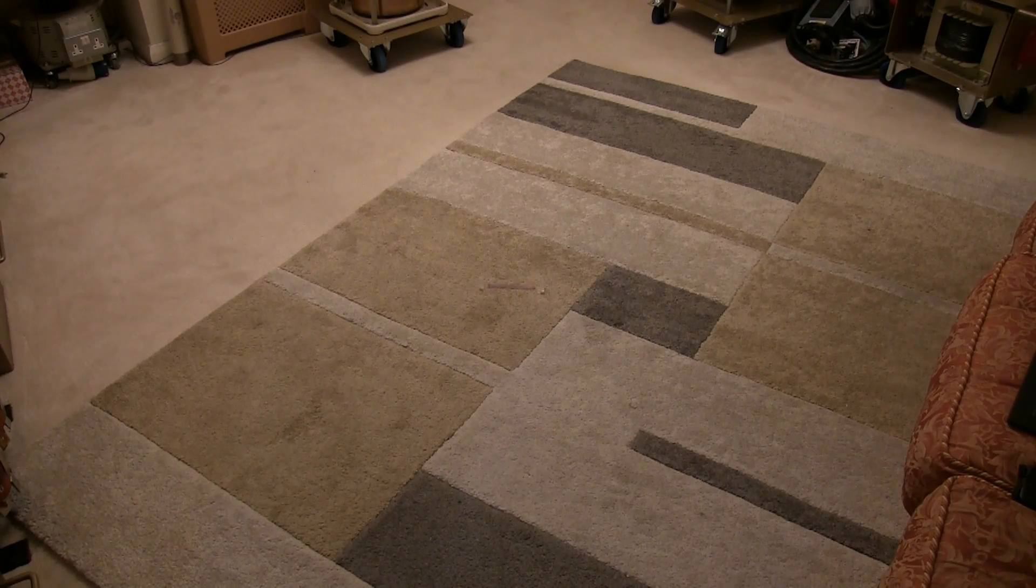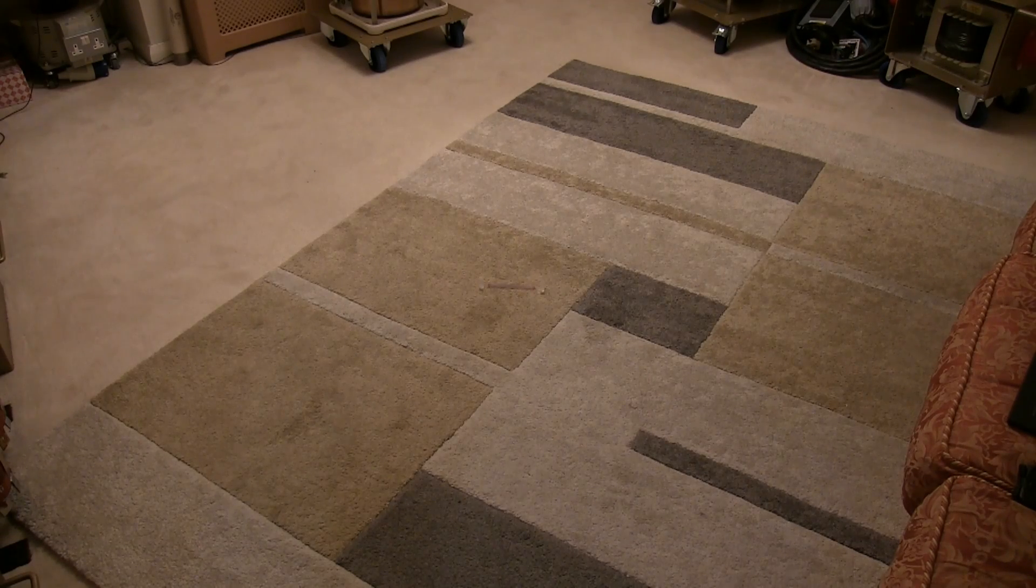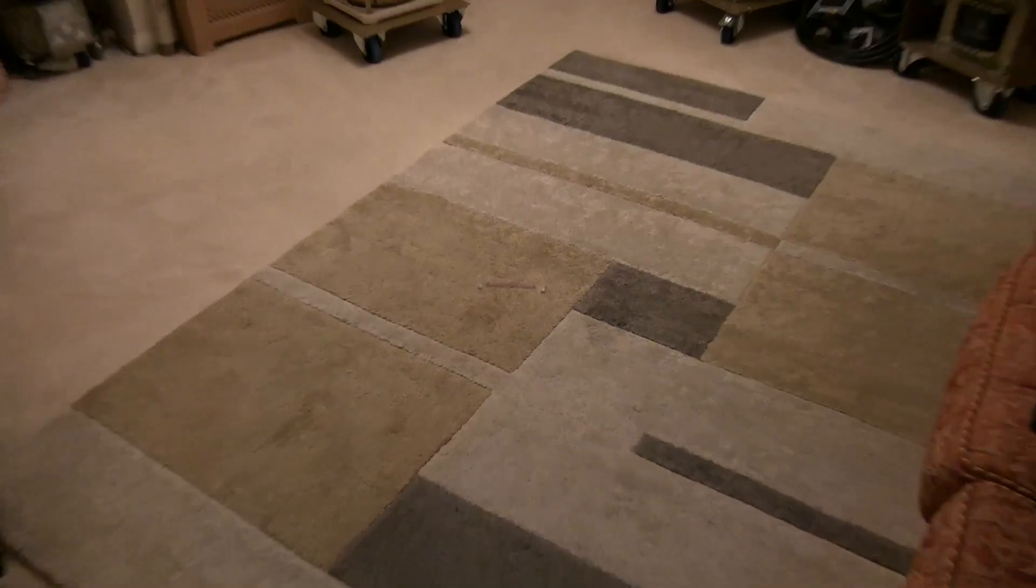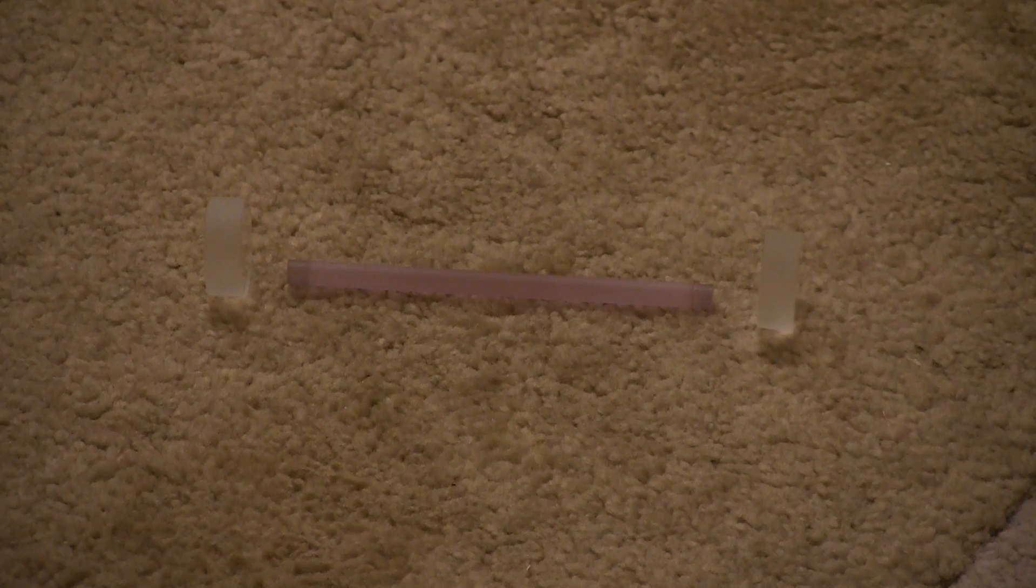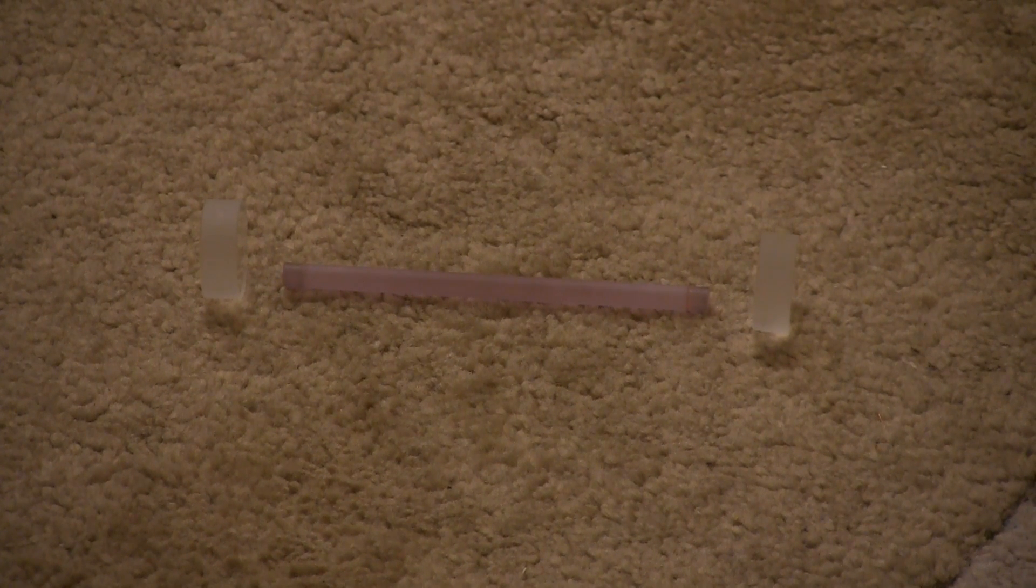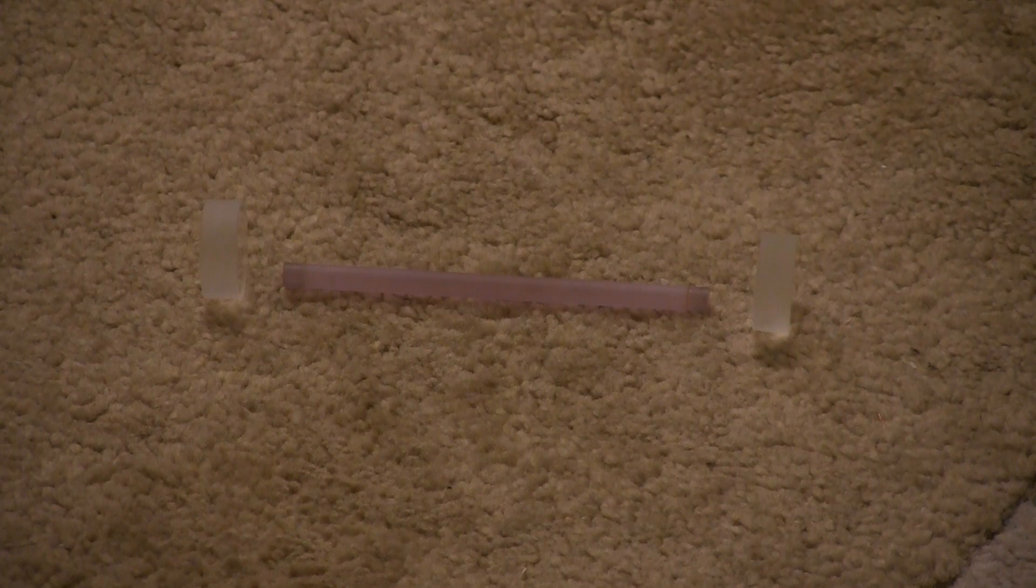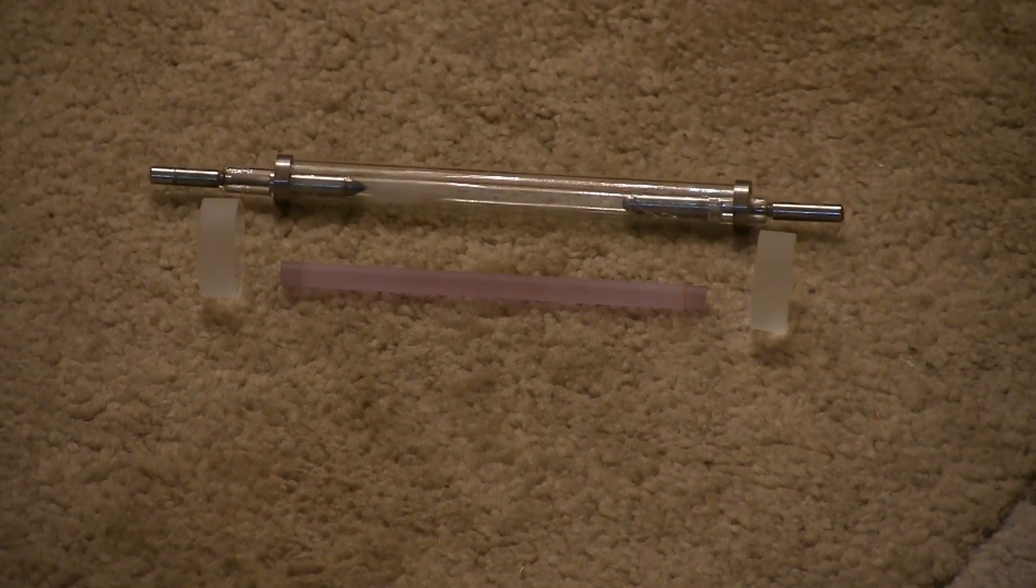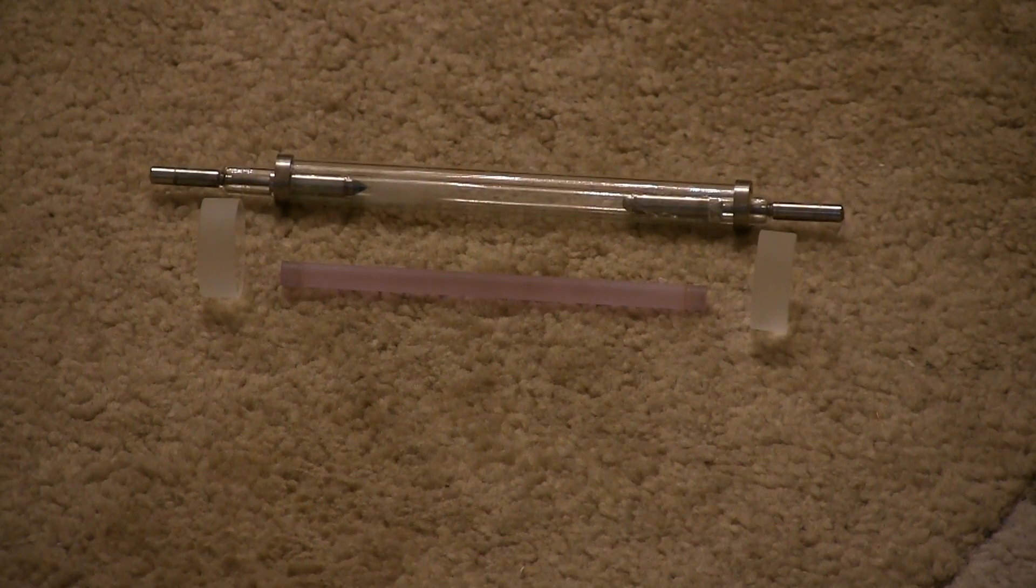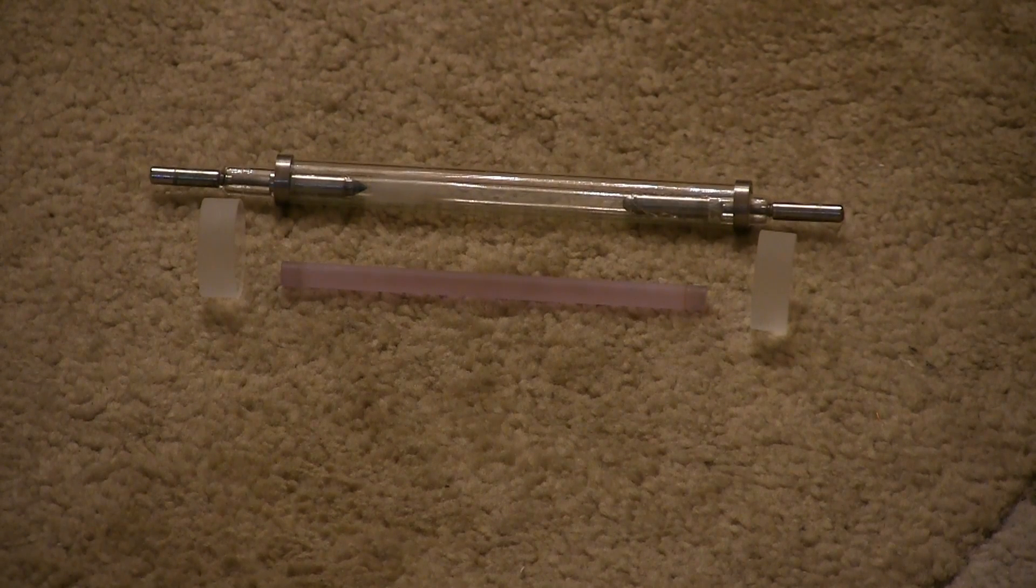So the key component of the YAG laser is right there before your eyes and it's simply that. That's all it is. Two mirrors and an ND-YAG rod. Oh, and you might need a light bulb as well. Now we can see the xenon lamp in the water cooling jacket which pumps that rod full of photons.